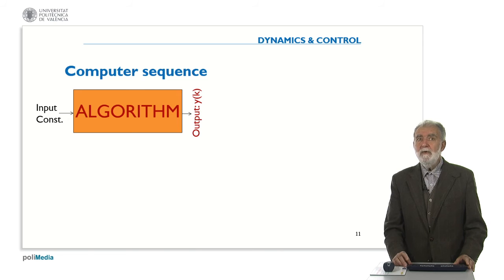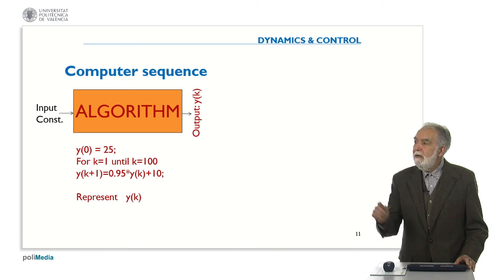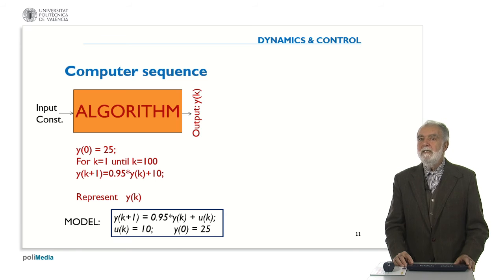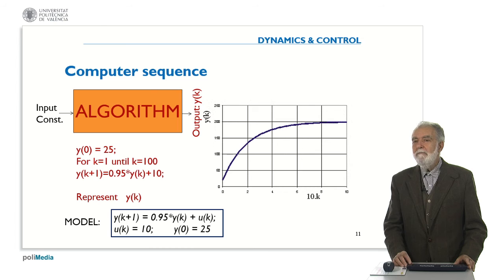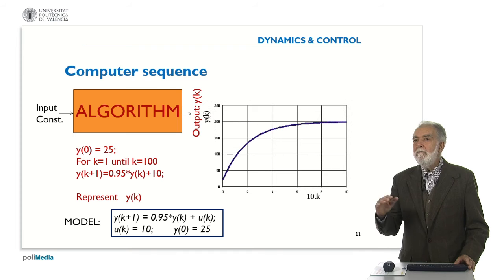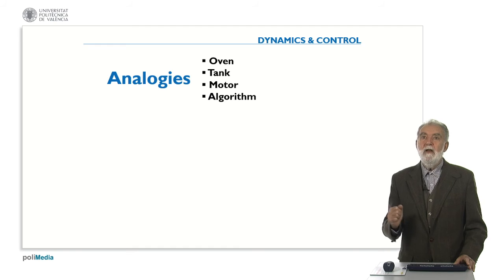So, in the simplest case, we can consider a computer sequence — an algorithm implemented in a computer. For instance, assume this very simple code: the initial value is 25, and for k equal 1 until k equal 100, we repeat a sequence and represent y of k. The model in this case is just an equation. Surprisingly, the behavior of y of k is precisely the same or very similar to the previous ones. That means the dynamic behavior of the oven, the tank, the motor, and the algorithm is similar — is analogous. There is a strong analogy between these four systems. The simplest one is the algorithm, because it's very easy to write, to store, to modify, and to analyze.